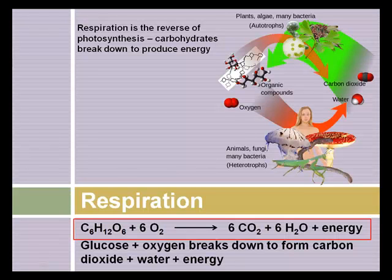The reverse process of photosynthesis is respiration. Respiration is where the carbohydrates formed through photosynthesis are broken down to release the stored energy. Plants, algae, and some bacteria are the autotrophs that produce energy through photosynthesis. Animals, fungi, and many other bacteria are the heterotrophs that consume the energy stored through photosynthesis.